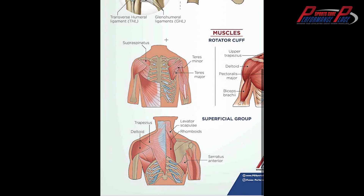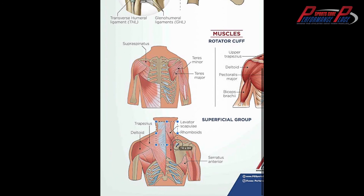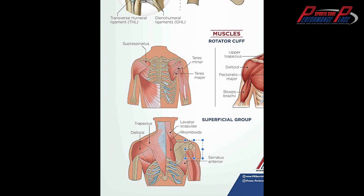The shoulder blade is a moving strut — it allows the shoulder to do what it needs to do without falling off the body, because it's only held on with one bony attachment and that's the clavicle right there. The AC joint is the junction between them.